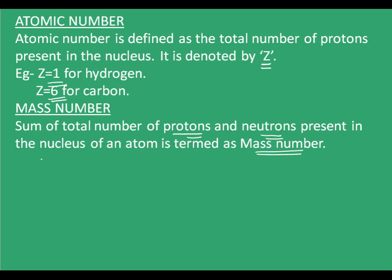For carbon, the mass number equals the number of protons, that is 6, plus the number of neutrons, that is also 6, giving a mass number of 12. The case of hydrogen is a little tricky — hydrogen doesn't have any neutron, hence the mass number of hydrogen is simply the number of protons it has, which is equal to 1.